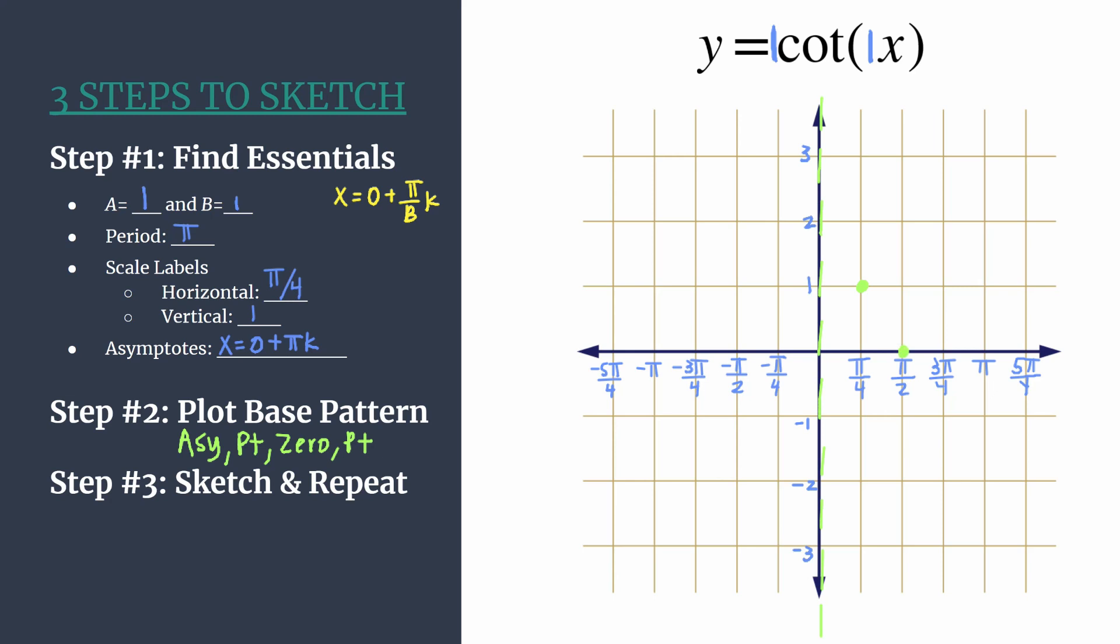And our final piece of our base pattern will happen at the third horizontal tick mark to the right. So that's at three pi over four. And you find the y-coordinate simply by taking the opposite value of a. So that'll be a negative one in this case. So plot a point at three pi over four, negative one.